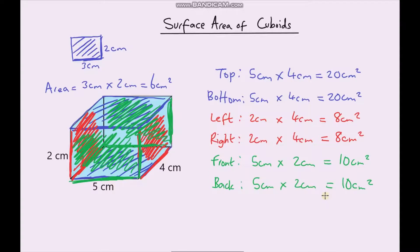So we have calculated the surface area of each of the different faces of our cuboid. Now to calculate the total surface area, we just add them all together. So 20 plus 20 is 40.